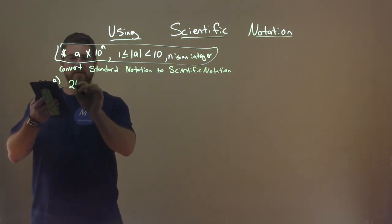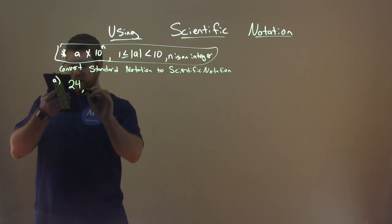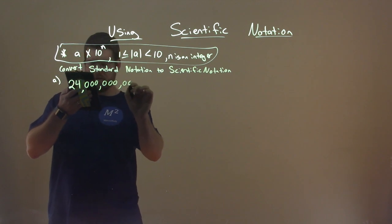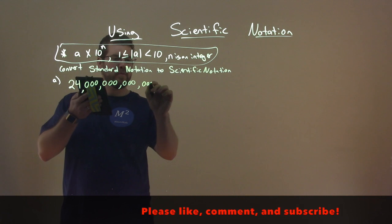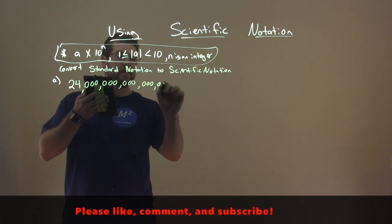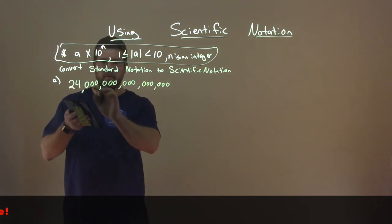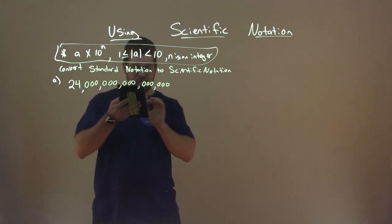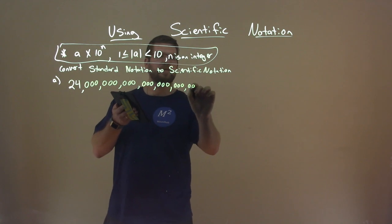It is 24 followed by a lot of zeros — let me zoom in because I'm going to forget. There are 7 sets of three zeros, which brings us to 21, and one more is 22 places.